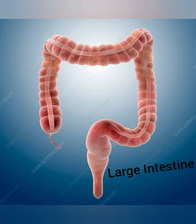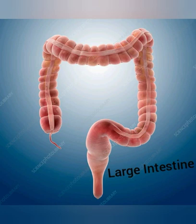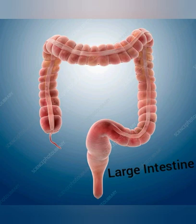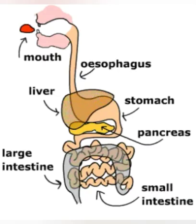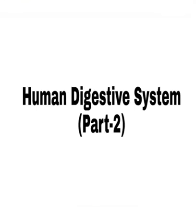The remaining undigested material passes into the large intestine. The large intestine has a very large diameter in comparison to the small intestine, but its length is only about 1.5 meters. The undigested food is excreted from the body through the large intestine. This is the whole process of digestion. I hope you have understood the whole process of the digestive system. Thank you.